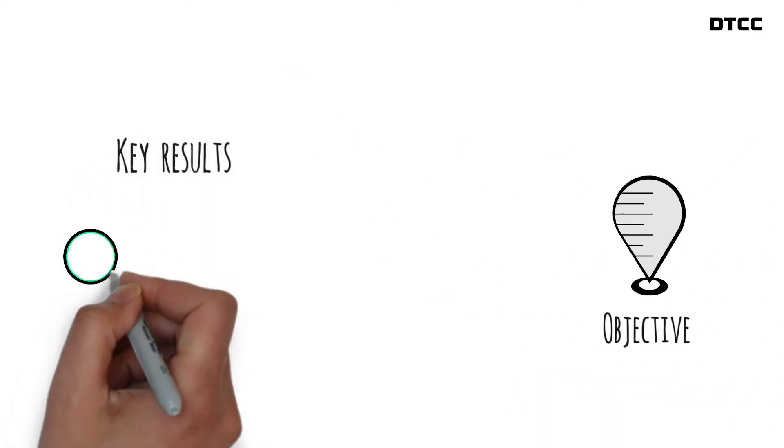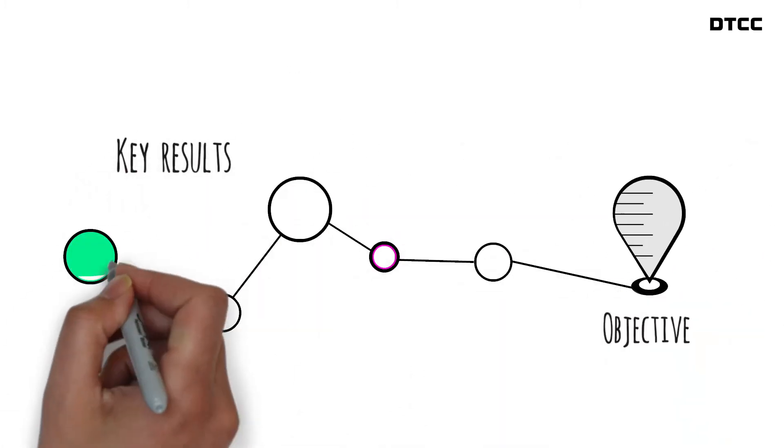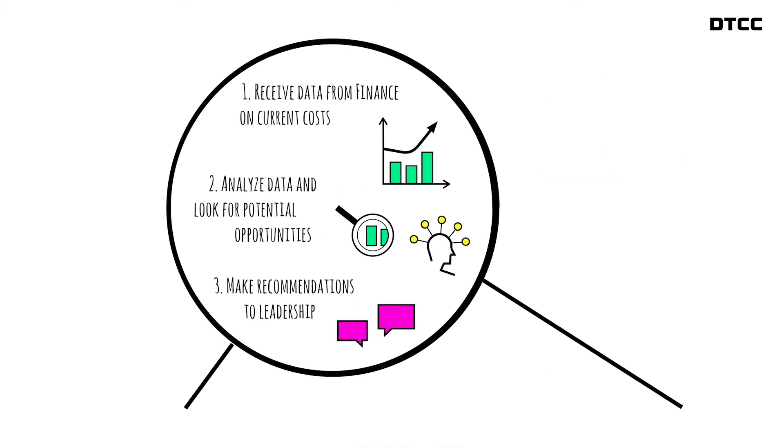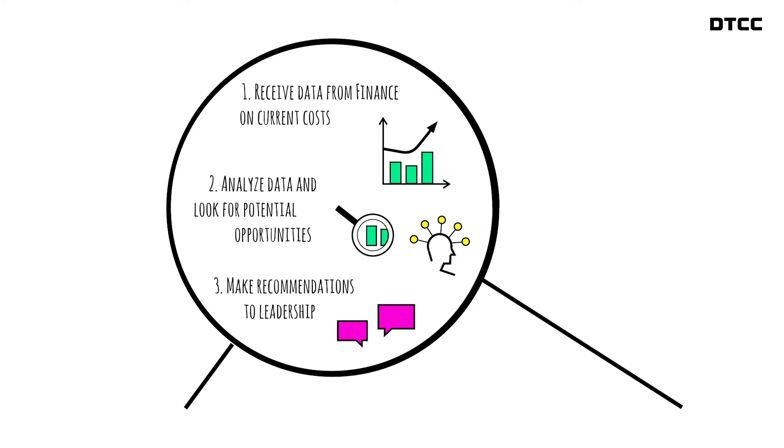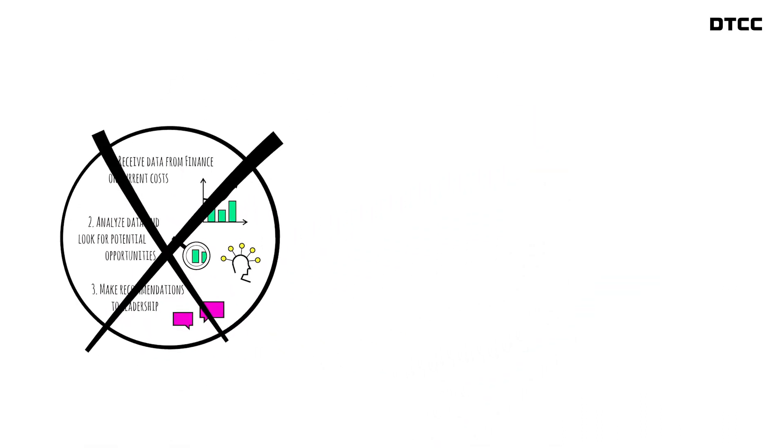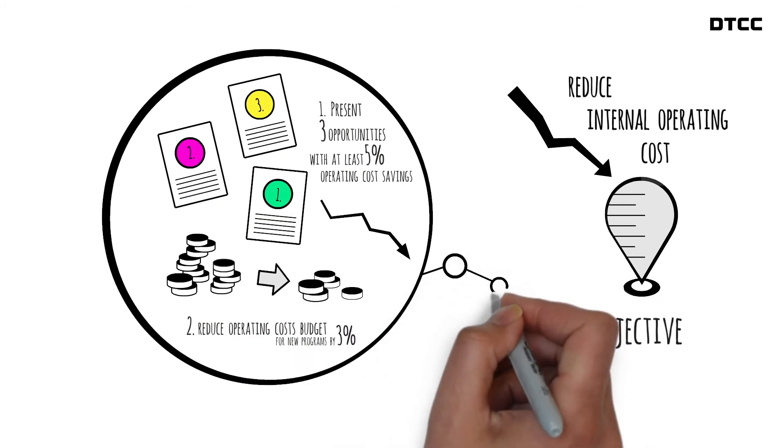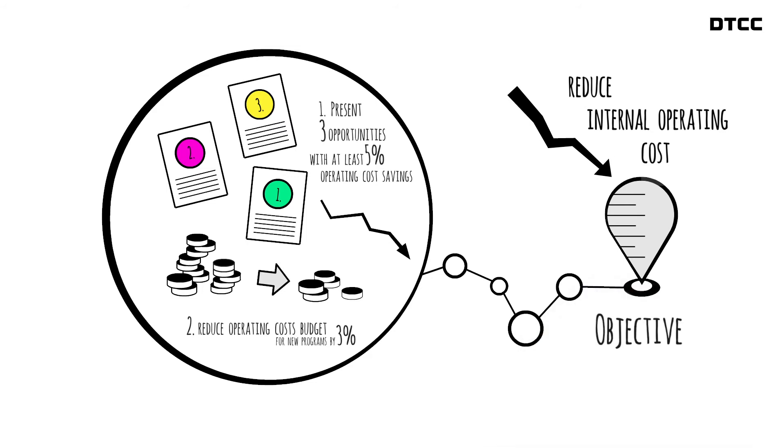Key results are the things that will help us achieve our objective. They're measurable and specific, but they're not just a to-do list of all the tasks that need to be done. As you can see, a well-written OKR creates a compelling target and a specific, measurable path to get there.